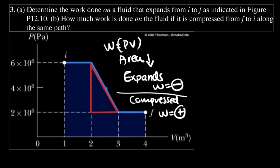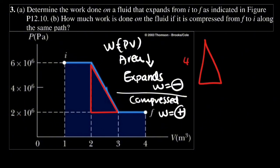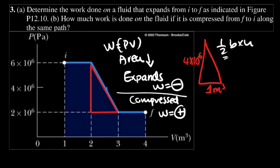For the triangle: the height is 6 minus 2, which is 4 × 10⁶ Pascal, and the base is 3 minus 2, which is 1 m³. The area of a triangle is half base times height, so the area is half × 1 × 4 × 10⁶, giving 2 × 10⁶.